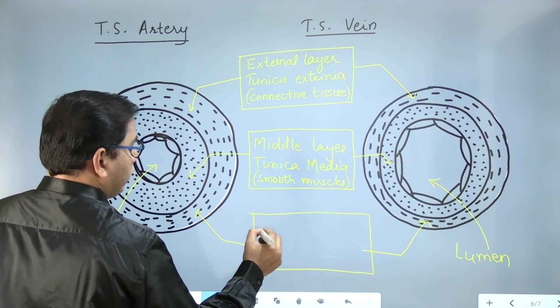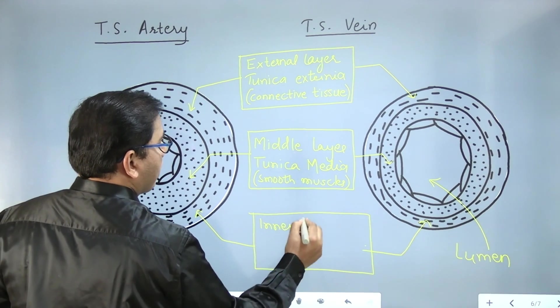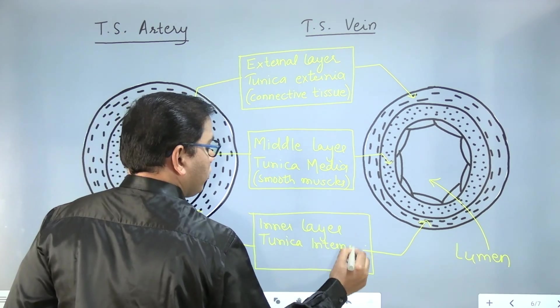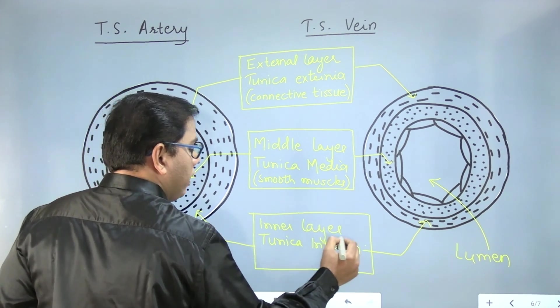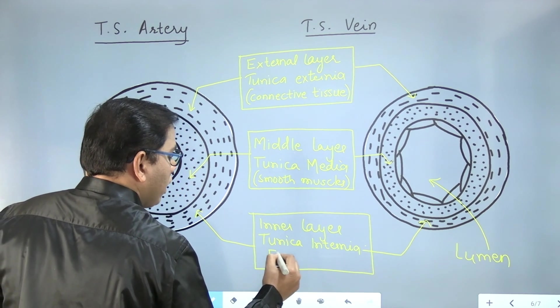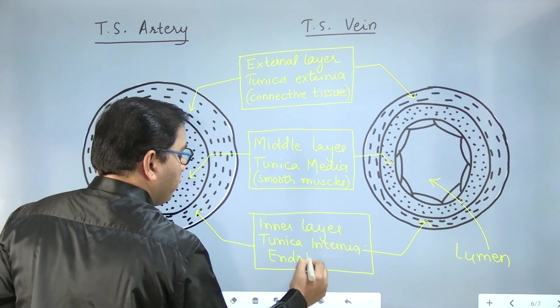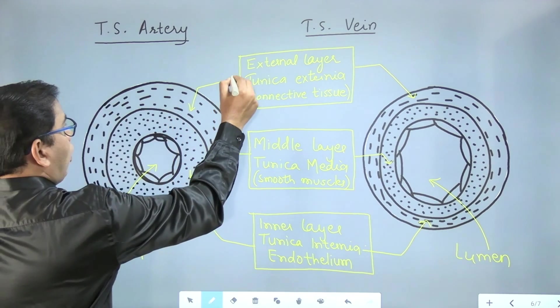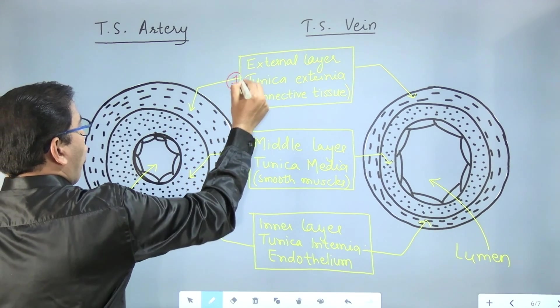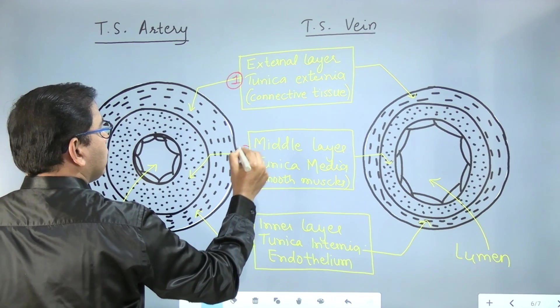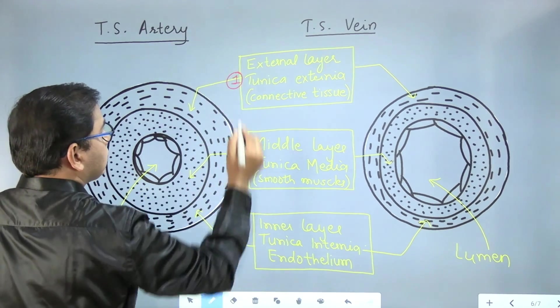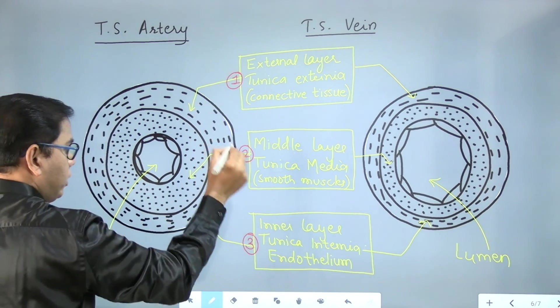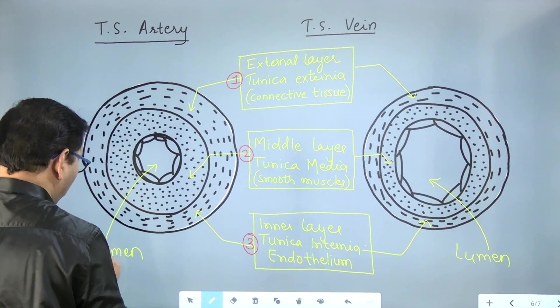And the third or inner layer. So these are four prominent parts of the TS of artery and vein: one, two, three, and four.